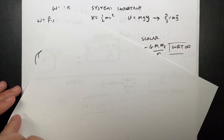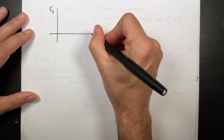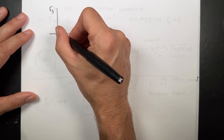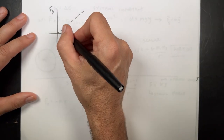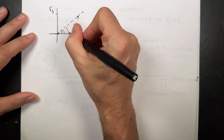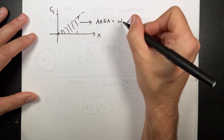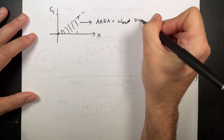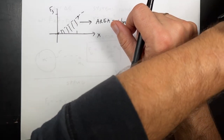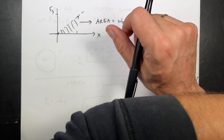Here's something interesting: if I plot the spring force as a function of position x or S, as I stretch the spring the force increases linearly. If I go from one position to another, I can calculate the area under that curve — the area under the force-versus-position curve is equal to the work done. That would also be equal to the change in potential energy (within a sign). Don't worry too much about the sign here.